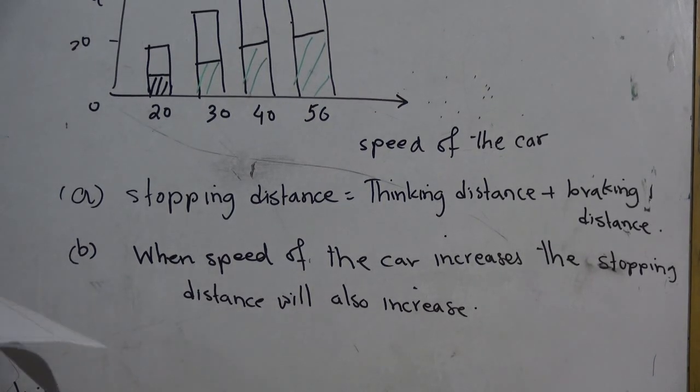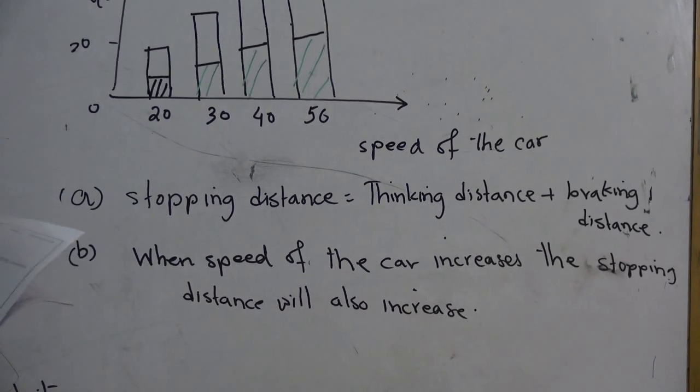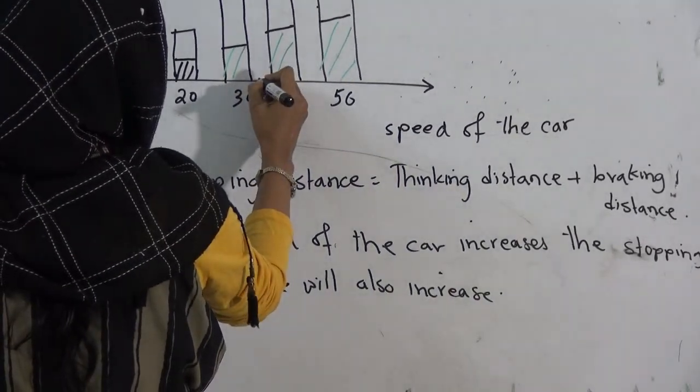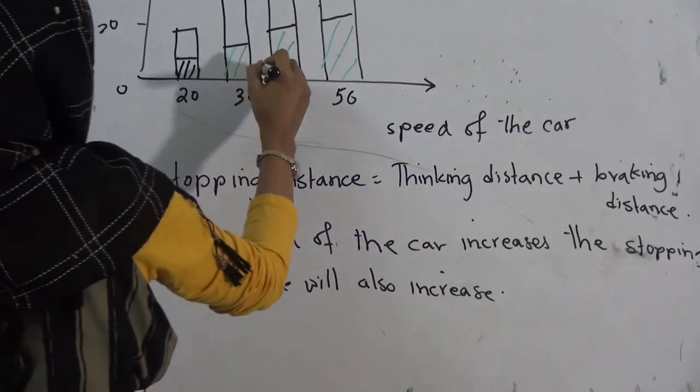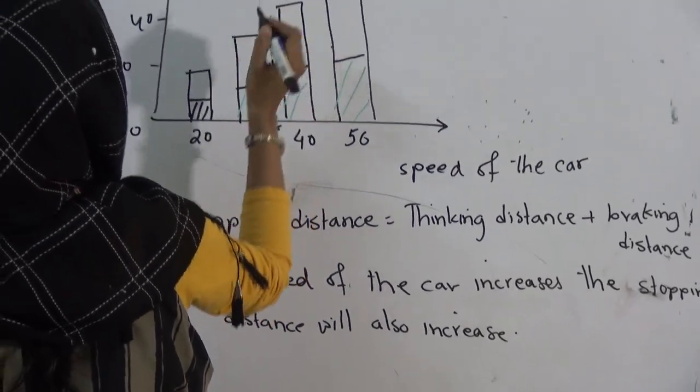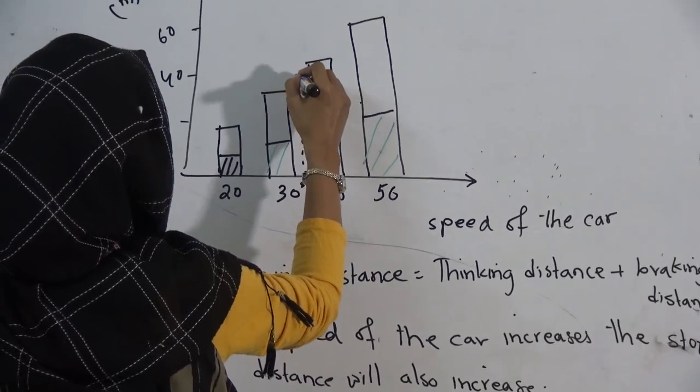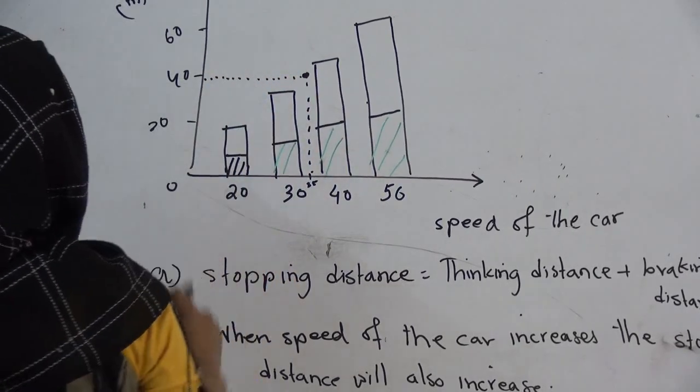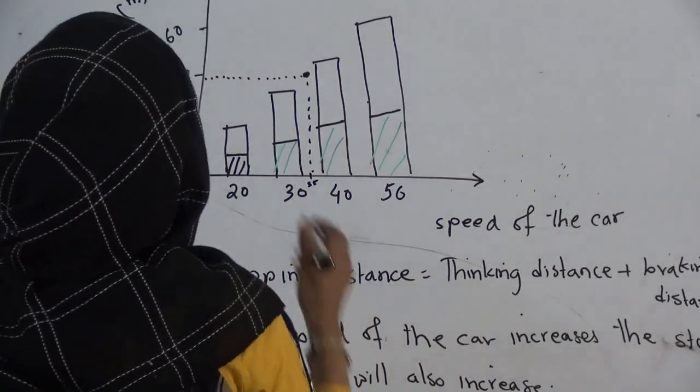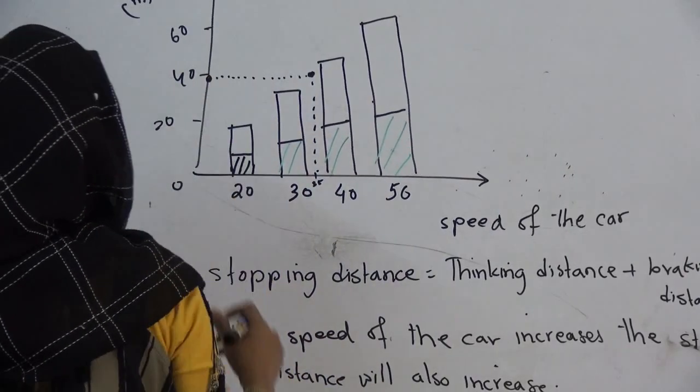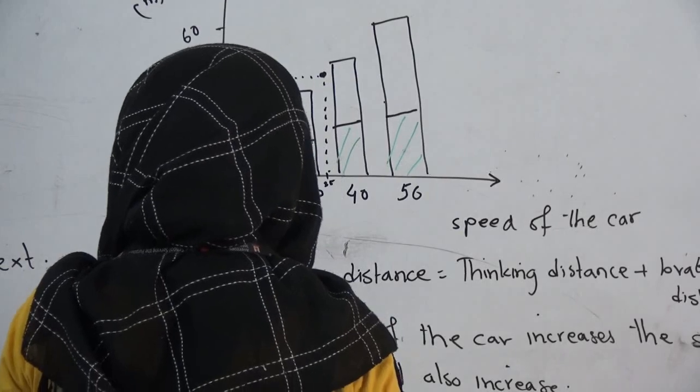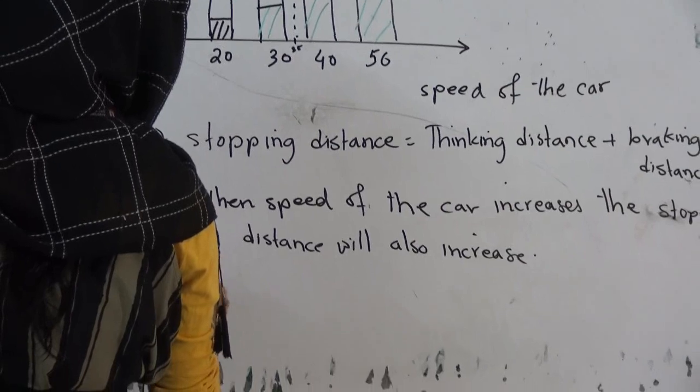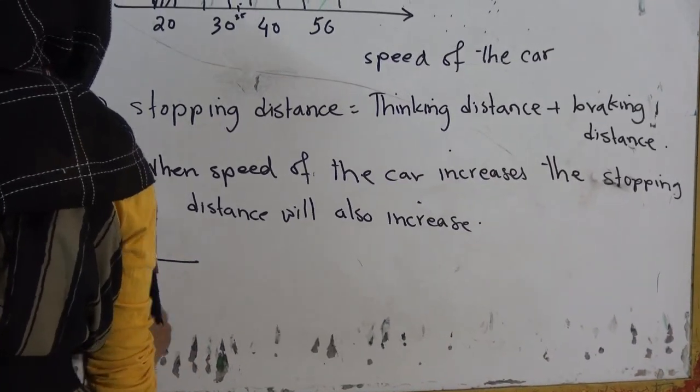Number C, use the graph to estimate the stopping distance for a car traveling at 35 mile per hour. 35 mile might be somewhere here. So draw a line from here. Since they asked you to estimate, it might be here. Then draw horizontal line and connect it with the vertical axis. So the intersecting point should be the value of distance for the speed of 35 miles per hour. You can find it according to your graph.